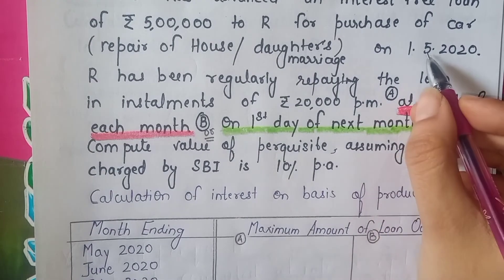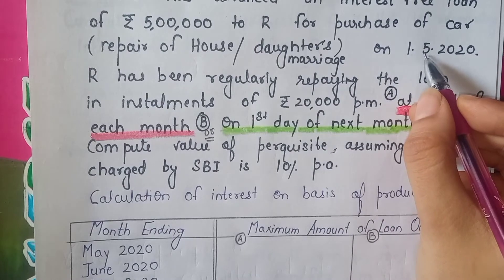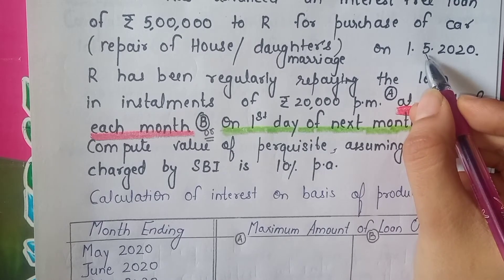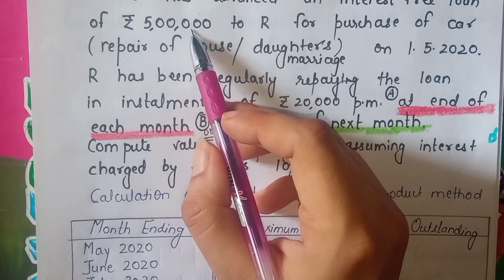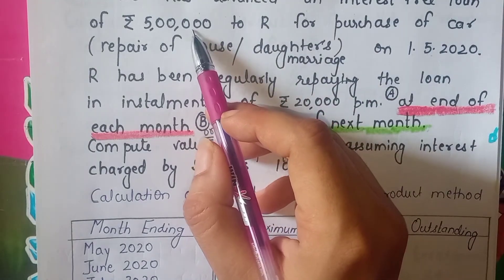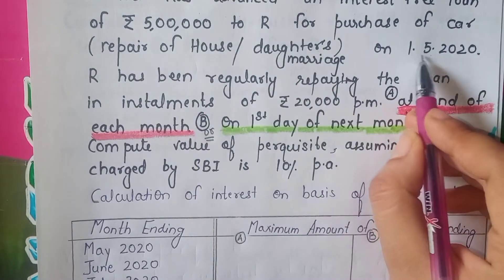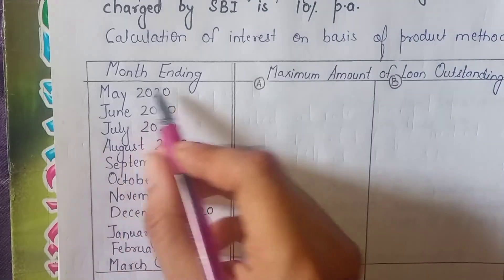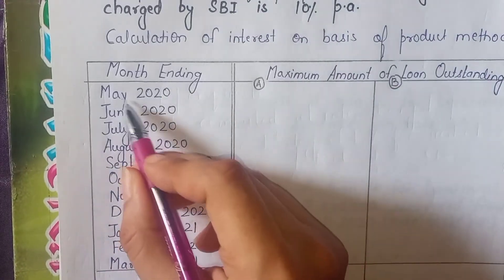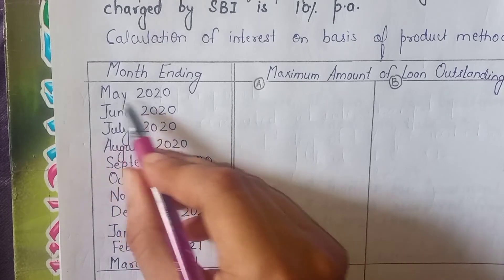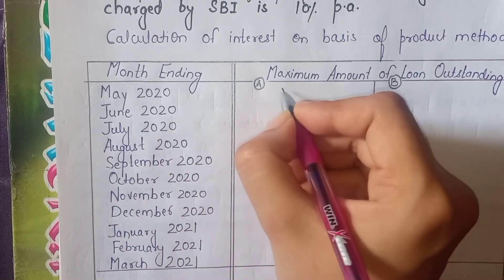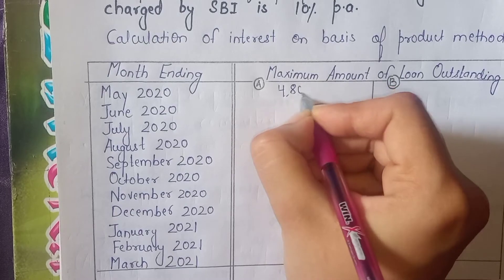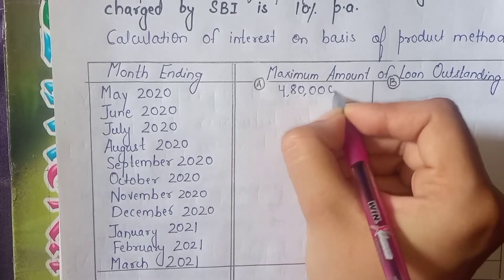In situation A, the loan was received on 1st May 2020. The first installment of ₹20,000 is paid on 31st May, so the outstanding balance at month ending May 2020 is ₹4,80,000. Then at month ending June it is ₹4,60,000.